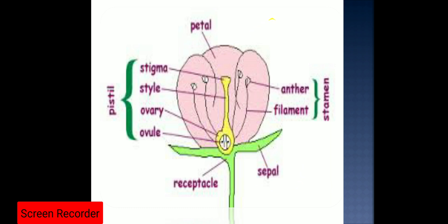The third whorl is the androecium, and the unit of the androecium is the stamen. The stamen has two parts: the anther and the filament. The anther is filled with pollen sacs, and the pollen sacs are filled with minute pollen grains which contain the male nuclei that will take part in the process of fertilization.